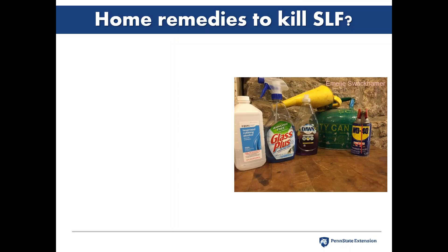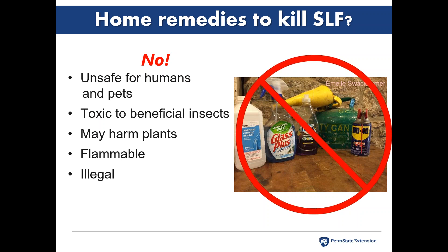People are using dangerous home remedies — rummaging through garages, medicine cabinets, or under the sink. We need to get this message out clearly: these are unsafe for humans and pets, toxic to beneficial insects, may harm plants, some are flammable, and this is illegal. We really need to use EPA-registered insecticides that have labels and have been tested for safety.